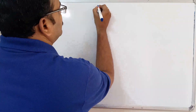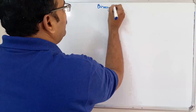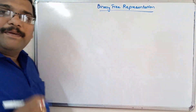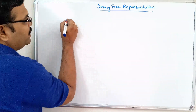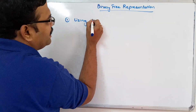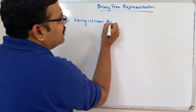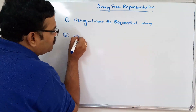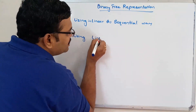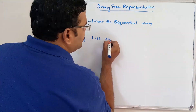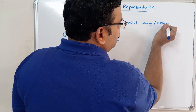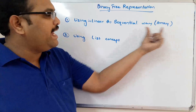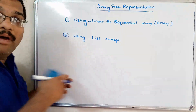We can represent a binary tree during implementation in two ways. The first is using a linear or sequential method, and the second is using a list concept. The first one is by using the array concept and the second one by using a linked list.